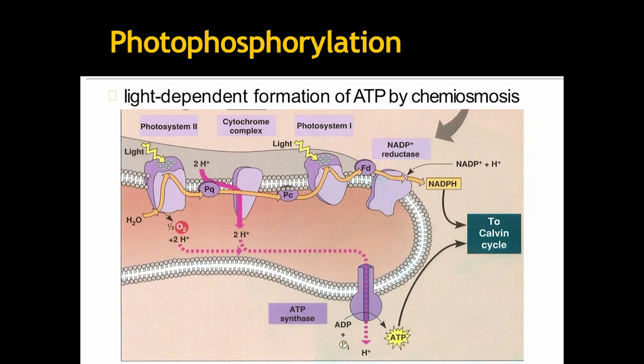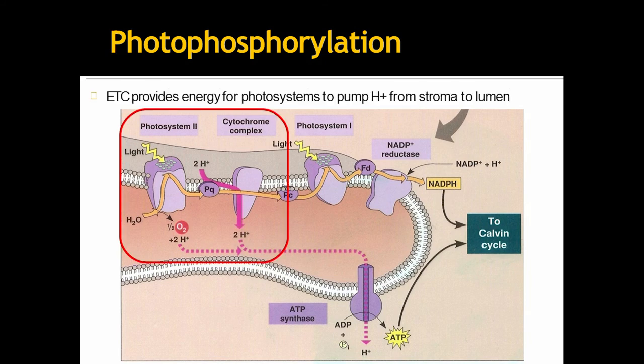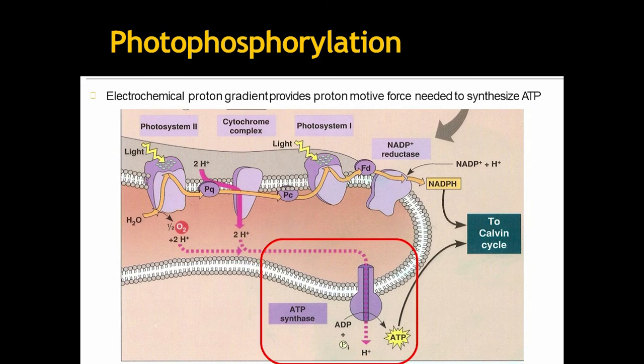So, this is again the whole system, the five complex system, which I have discussed earlier. Now, what is photophosphorylation? This is the light dependent formation of ATP by chemiosmosis. Electron transport chain provides energy for photosystems to pump H plus from stroma to lumen. Look in the second step. Now, look at this image. Electrochemical proton gradient provides proton motive force needed to synthesize ATP.